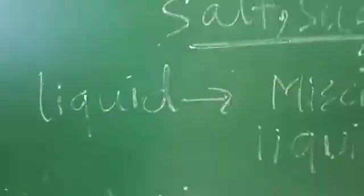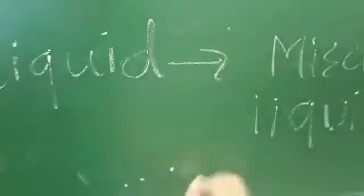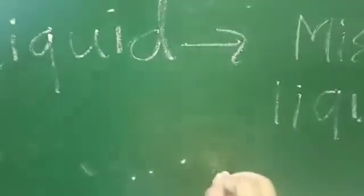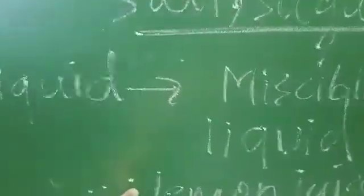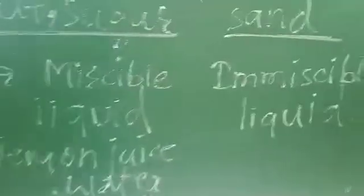For example, lemon juice and water — this is a miscible liquid, meaning it is a liquid which dissolves in water.